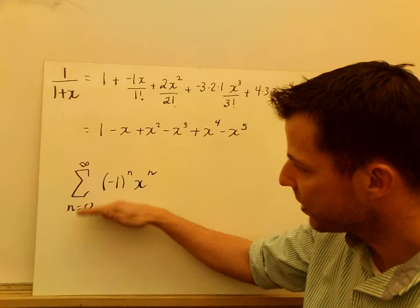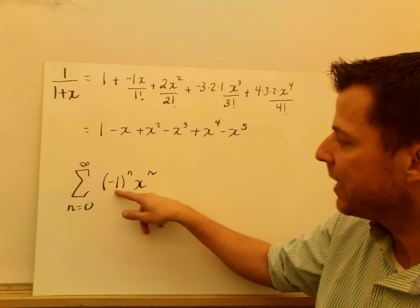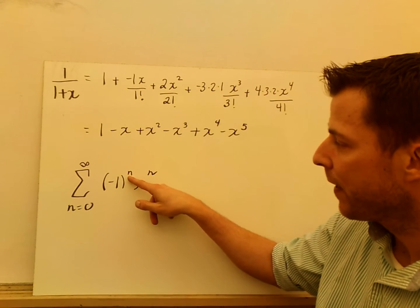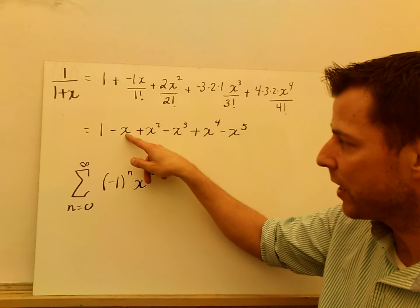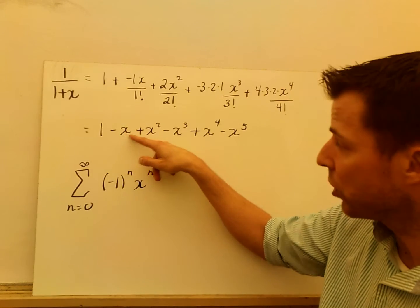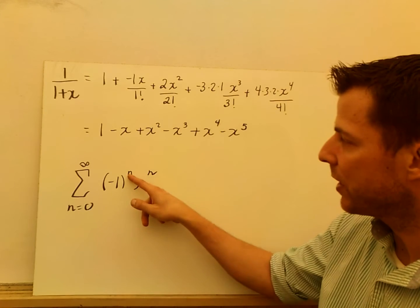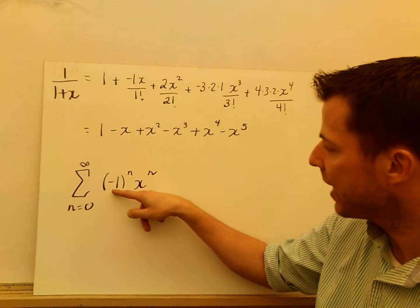So if I was going to write the sum from 0 to infinity, I need negative 1 to the n, because if I have first power, that would ensure that's, you know, 0 term, first term, second, that would ensure that every other term is going to alternate being negative.